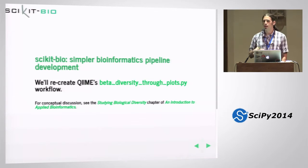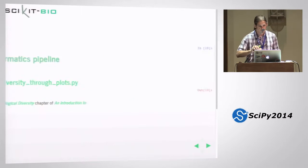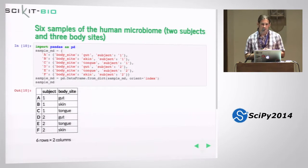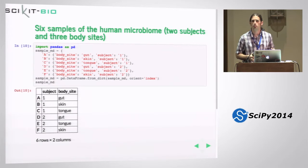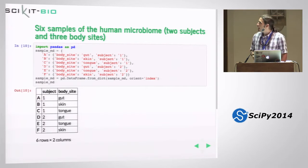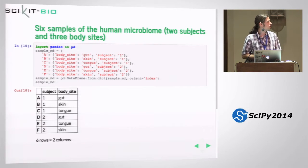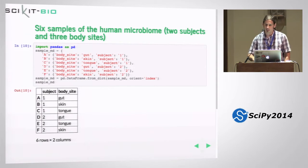I'm not going to get too into a conceptual discussion of what's going on in this demo — that's the role of the Introduction to Applied Bioinformatics textbook. The demo is focused on studying the human microbiome — literally trillions of microorganisms that live in and on the human body, which we're learning play a huge role in human health. I've put together a small demo dataset: six human microbial community samples from two subjects, each sampled from three body sites — the gut, the skin, and the tongue.